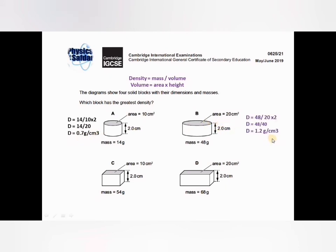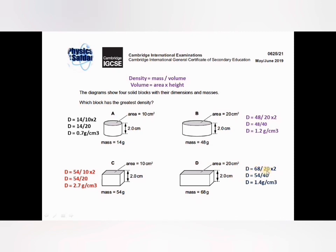For diagram B: mass is 48, volume is 20 times 2 = 40, so density is 48 over 40 = 1.2 grams per cubic centimeter. For block C: mass is 54, volume is 10 times 2 = 20, so density is 54 over 20 = 2.7 grams per cubic centimeter. For object D: mass is 68, volume is 20 times 2 = 40, so density is 68 over 40 = 1.7 grams per cubic centimeter.